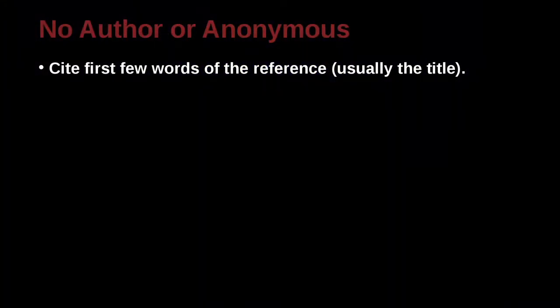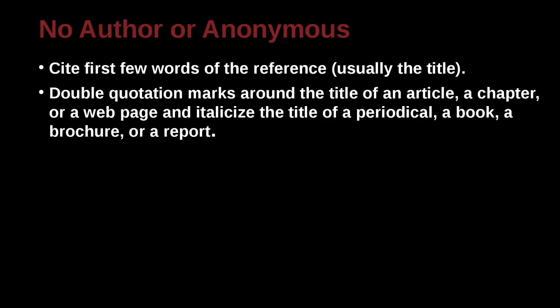For anonymous sources, you cite some of the words that are in the title. This will usually be the title of the book or the title of the article, which is similar to APA. Remember, use quotation marks around something that is part of something bigger. So a chapter uses quotation marks, but a book containing that chapter uses underline or italics.